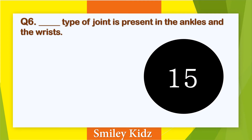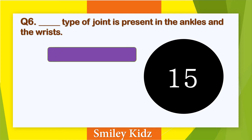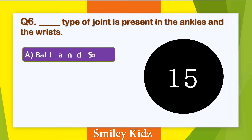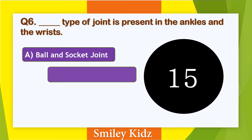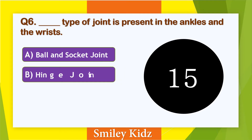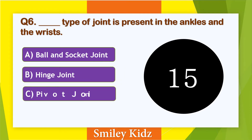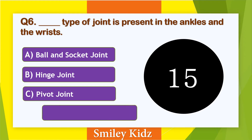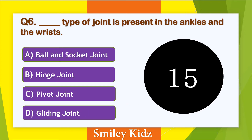Question number 6. Dash type of joint is present in the ankles and the wrist. Options are: A. Ball and socket joint, B. Hinge joint, C. Pivot joint, and D. Gliding joint. Your time starts now.